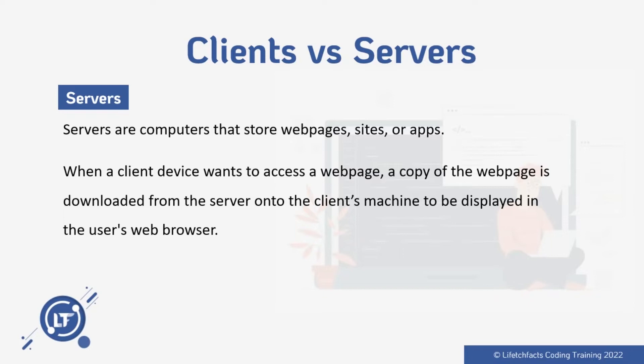When a client device wants to access a particular web page, a copy of that web page is sent from the server to the client's machine. The client's machine — such as the web browser — will then display it inside the browser tab. That's how everything works.